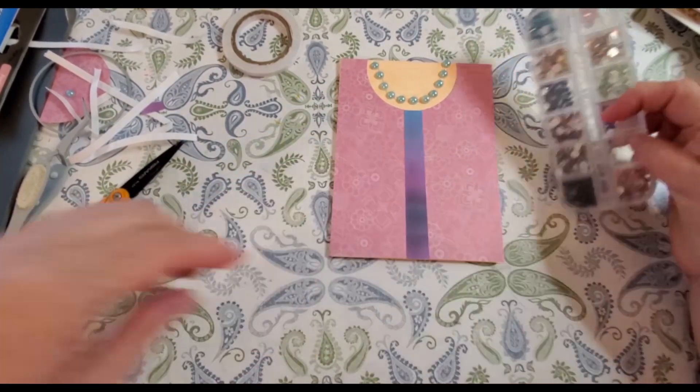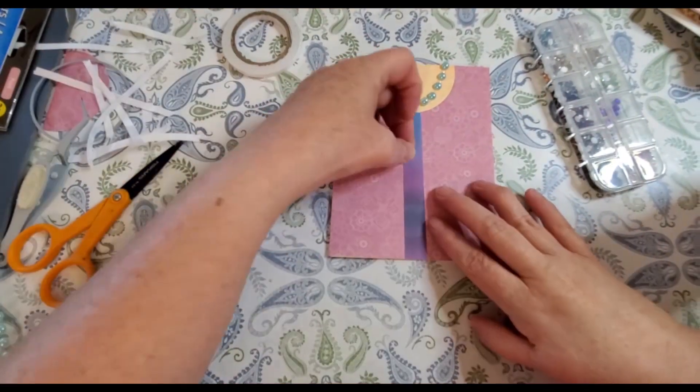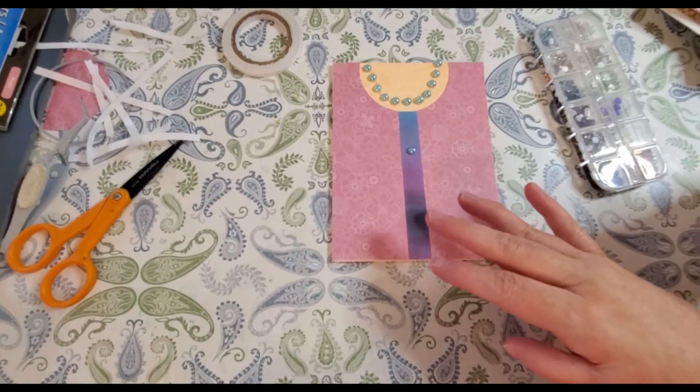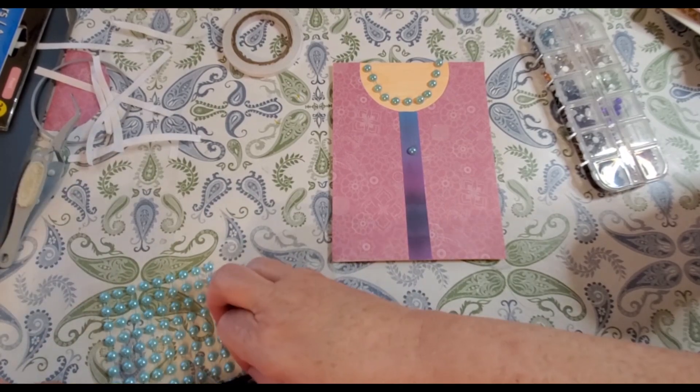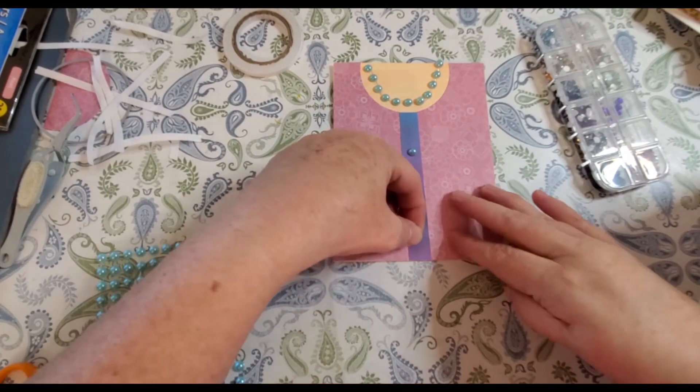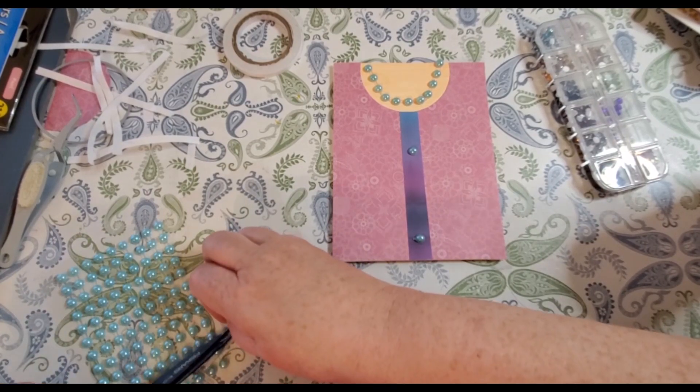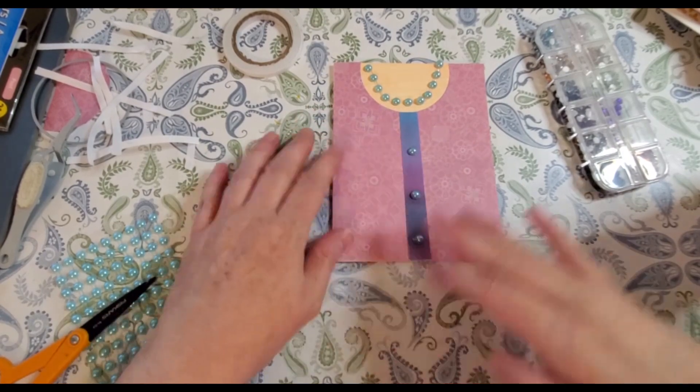I was going to use different gems, but then I decided to go with the blue ones. Since these come in a little line, you can cut them apart and use them singularly like I am. I'm going to put three right down the middle here. This is basic card making. Beginners, you can do this. This is easy peasy.